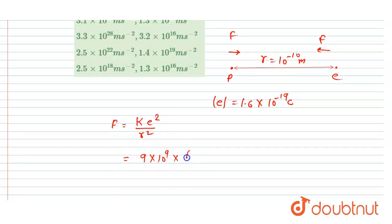1.6 × 10^-19 coulomb, so I will square it. And the distance square, that is 10^-10 meter square. So after solving you will get the force equal to 2.3 × 10^-8 newton. Very simple.